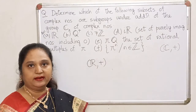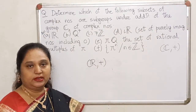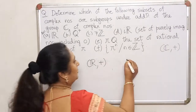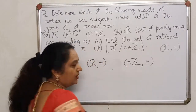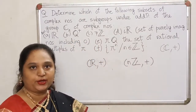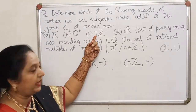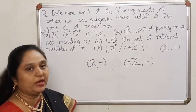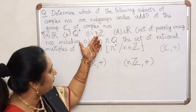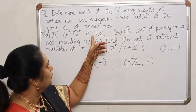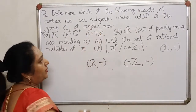Let's look at the next one: 7Z. Remember in the last chapter, we proved that for any natural number n, nZ with respect to addition is a group. So in particular, when I take n equal to 7, 7Z is also going to be a group with respect to addition. And therefore, it is a subset of C, so it will be a subgroup of C. So this one is also a subgroup.